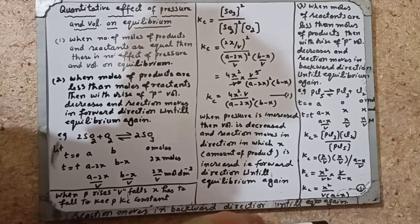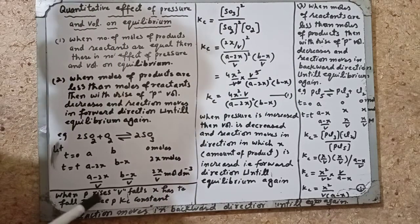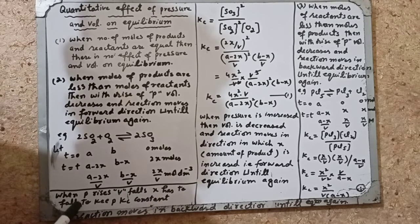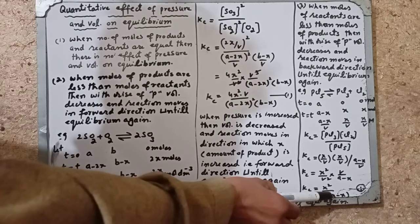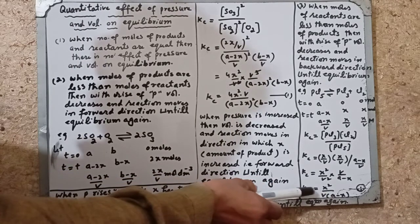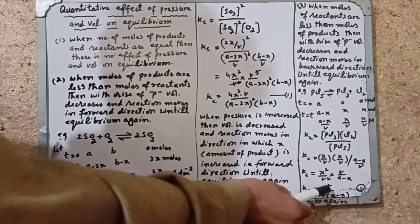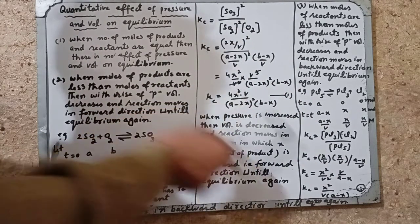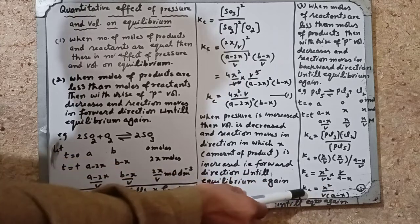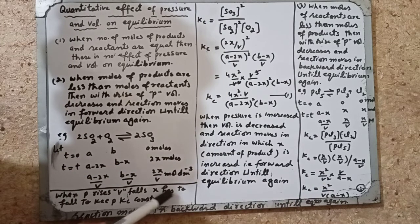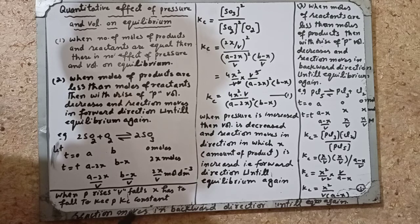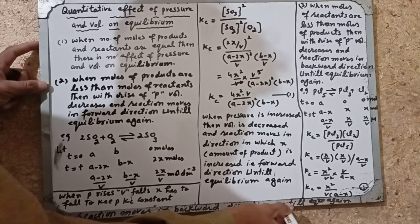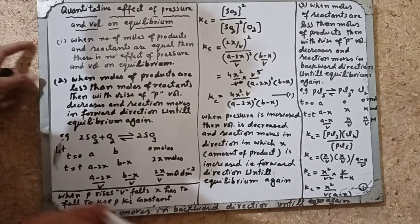اس equation میں: when pressure rises, volume falls۔ X اور V divide ہو رہے ہیں، تو Kc constant رکھنے کے لیے X کو بھی کم کرنا پڑے گا۔ جب divide کر رہے ہوں اور ایک کم ہو تو دوسرا بھی کم کرنا پڑتا ہے تاکہ value constant رہے۔ So when pressure rises, volume falls, X has to fall — reaction moves in the backward direction until equilibrium is reached again. Thank you, Allah Hafiz.